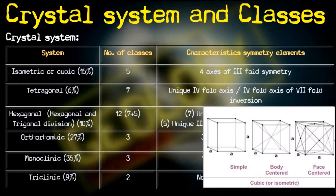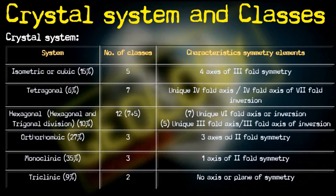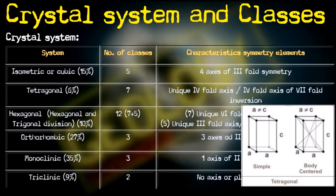Next is the tetragonal system. In this system, the two horizontal axes are equal and perpendicular to each other, and both are perpendicular to the third axis, which is the c-axis. However, the c-axis is not equal to them — it can be either smaller or larger than the two horizontal axes.